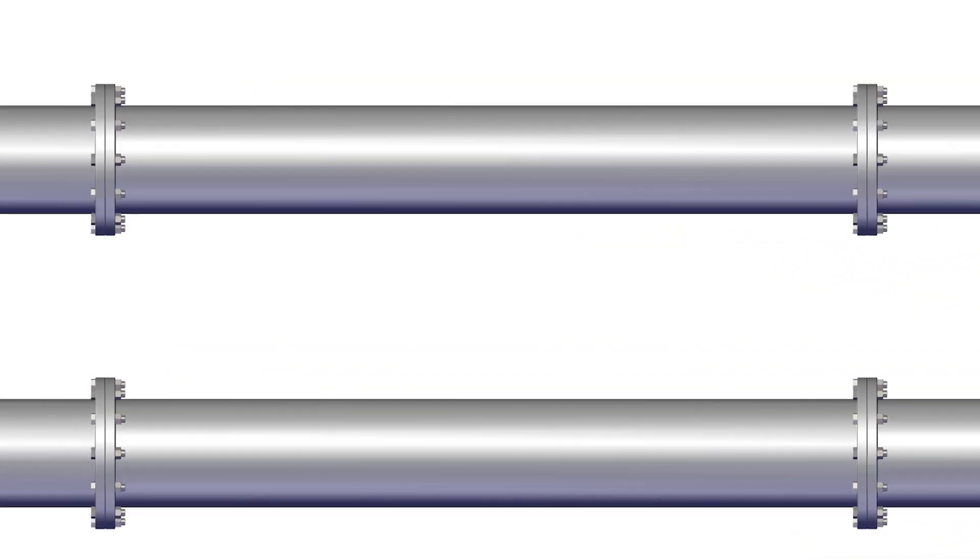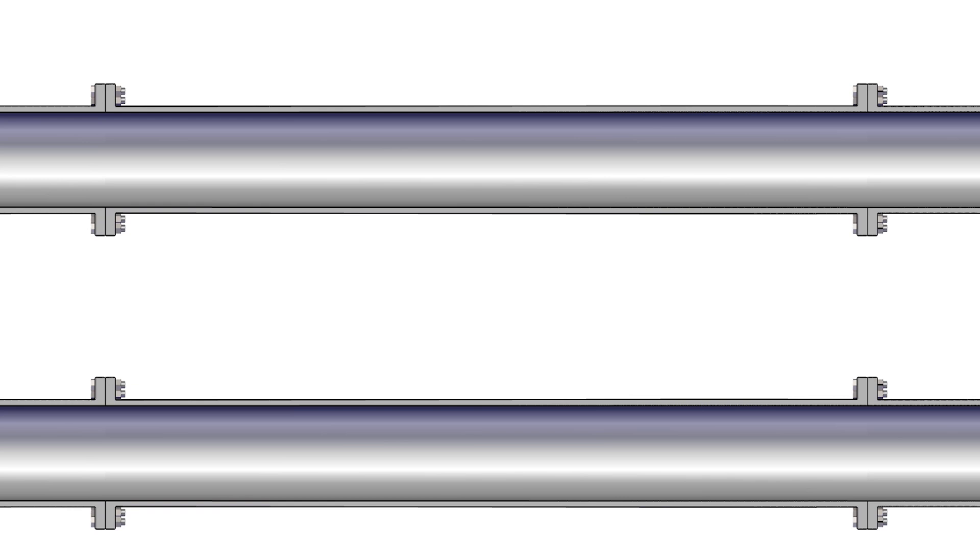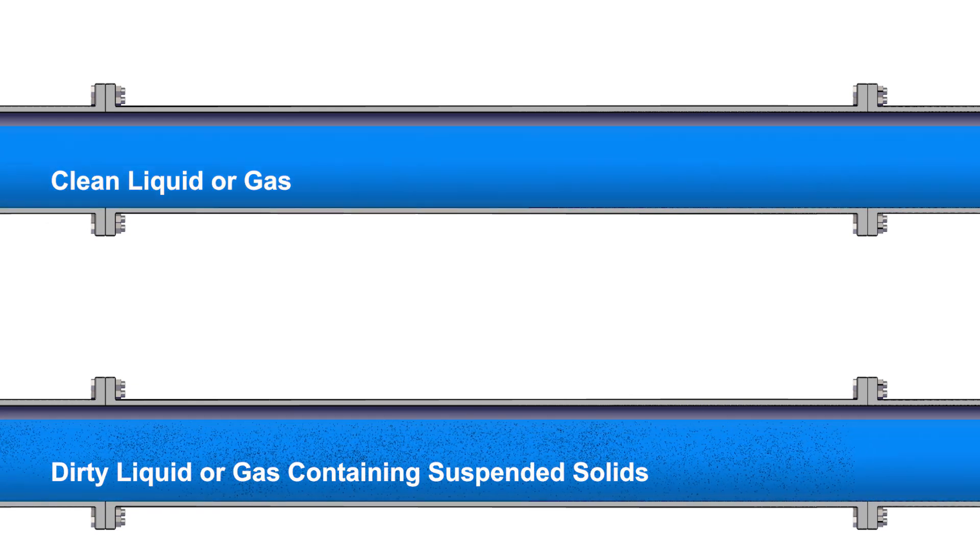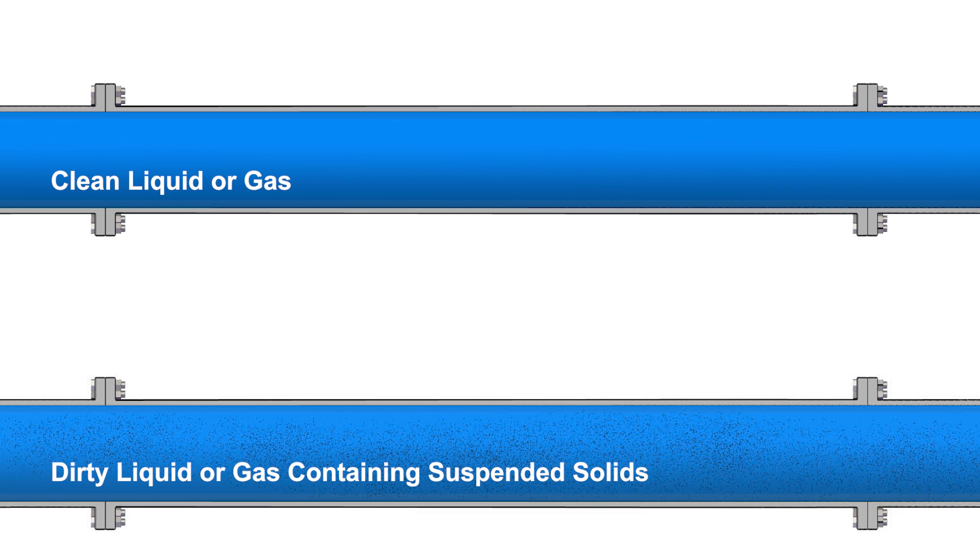When determining the valve's orientation in the pipeline, the primary consideration should be the type of pipeline media. De Zurich offers specific installation guidelines depending on whether the media is a clean liquid or gas, or a dirty liquid or gas containing suspended solids.